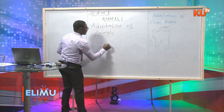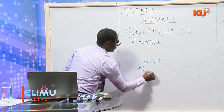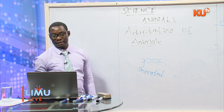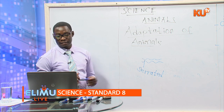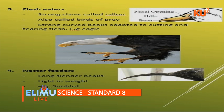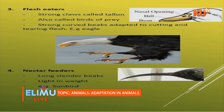Grain eaters — an example is a dove — have a short, straight, strong, and thick beak. Their feet are adapted for perching. Filter feeders have a flat, serrated beak; an example is a duck. They also have webbed feet because they get their food in muddy places. Serrated means having a zigzag-like shape, and the purpose of this shape is to filter the food because they get their food from the mud.